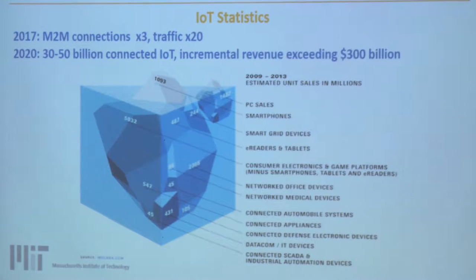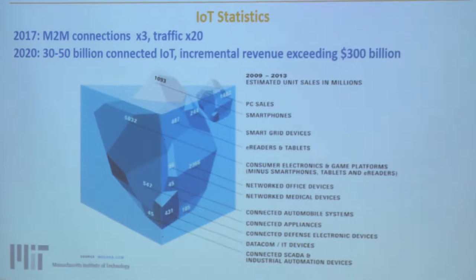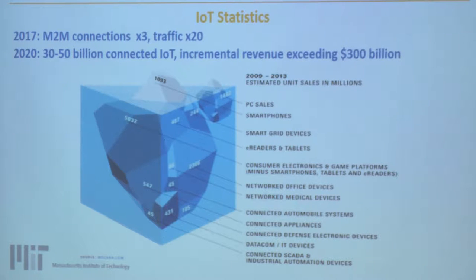The internet of things has a very bright and promising future, as we can see from the statistics. In 2017, IoT devices connected are predicted to triple and traffic to be 20 times more than today. In 2020, the number of connected IoT devices would range from 30 to 50 billion with incremental revenue of 300 billion. This diagram shows the distribution of sales from 2009 to 2013, spanning almost every application of daily life.